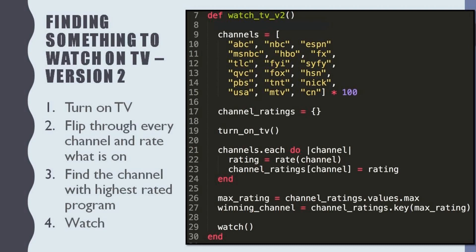From the code line 26, we take the maximum rating value. From the code line 27, we find the TV channel with the maximum rating program. From the code line 29, we watch that TV channel.